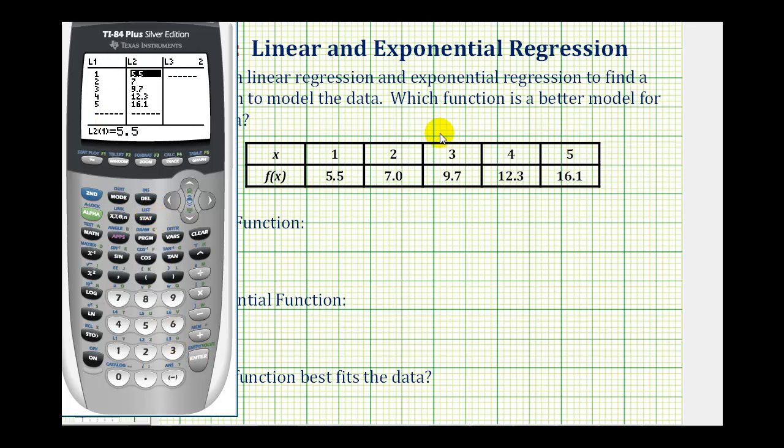L1 will be the x values. L2 will be the function values. I've already typed in the data to save some time. But if there was old data in here, we would go to the top of the column, let's say this column for L1, press clear and then enter. It clears the entire column and then we enter the new data. In this case I'll reenter one through five.